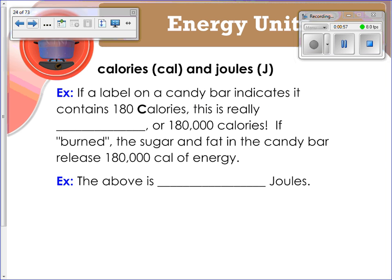For example, if you have a label on a candy bar and it says it contains 180 calories as you read it on the candy bar, this is actually 180 kilocalories, or 180,000 calories. It makes more sense scientifically if we assume that kilocalories are capital calories. If we burn the sugar and fat in the candy bar, it's going to release 180,000 calories of energy. The above is 750,000 joules if we use the conversion from the last page.